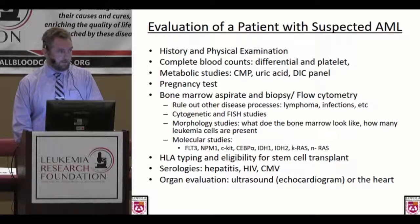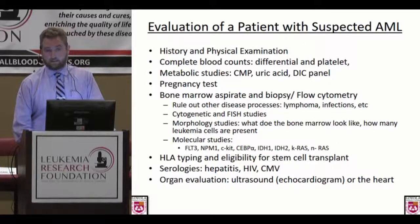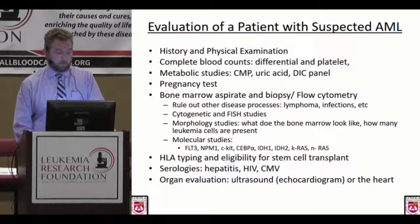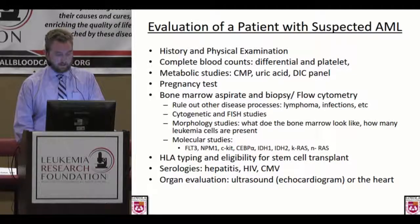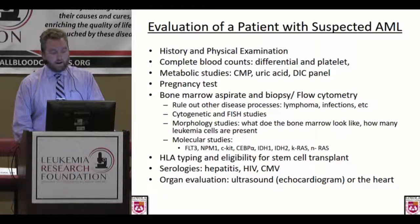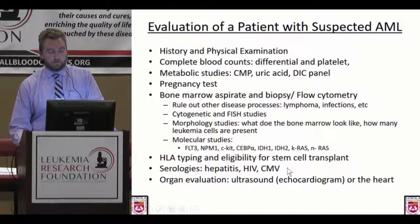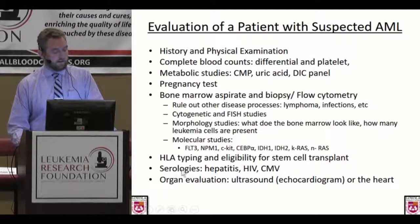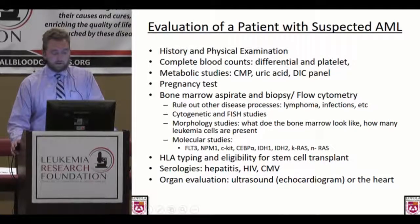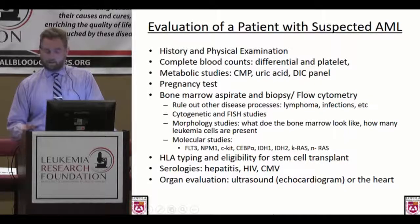Everybody with a new diagnosis needs a thorough exam. There's a variety of blood work in terms of metabolic and blood count evaluation. In women we always make sure they're not pregnant because our treatments are harmful to a potential baby. Everybody gets a bone marrow biopsy to rule out other diseases and to completely define the disease in terms of genetics and molecular studies. Pretty much everybody gets HLA typing looking at the potential role of transplant. We also check serologies for hepatitis, HIV, and CMV, and baseline organ evaluation — particularly the heart, because our chemotherapy can be toxic to heart function.